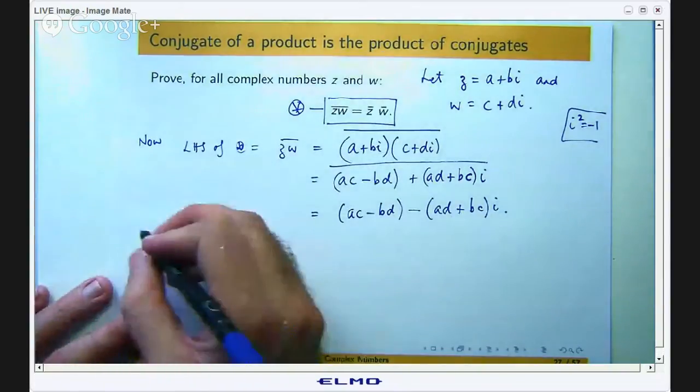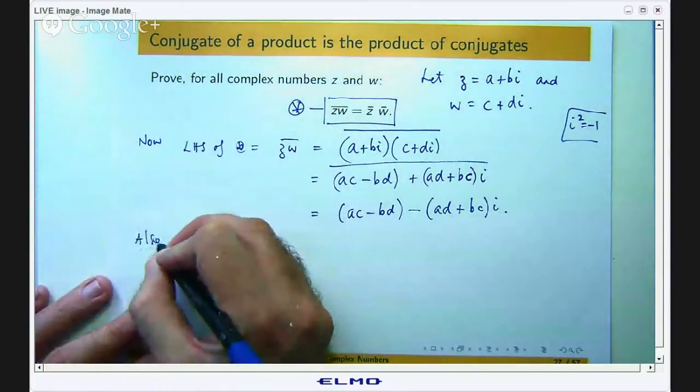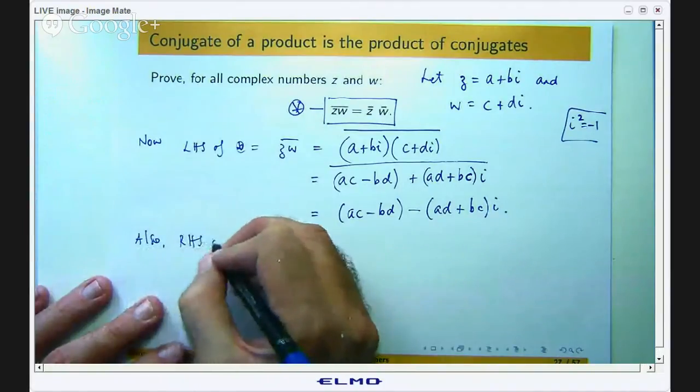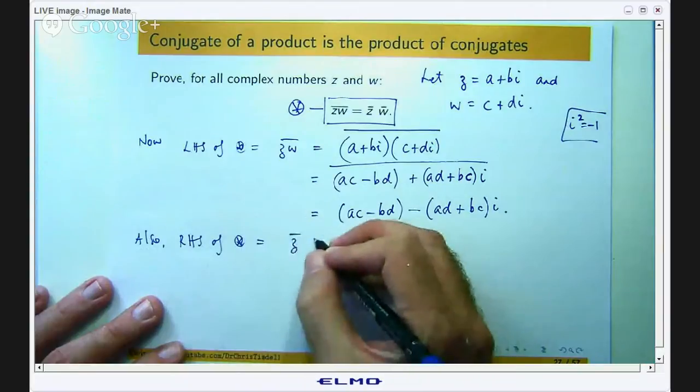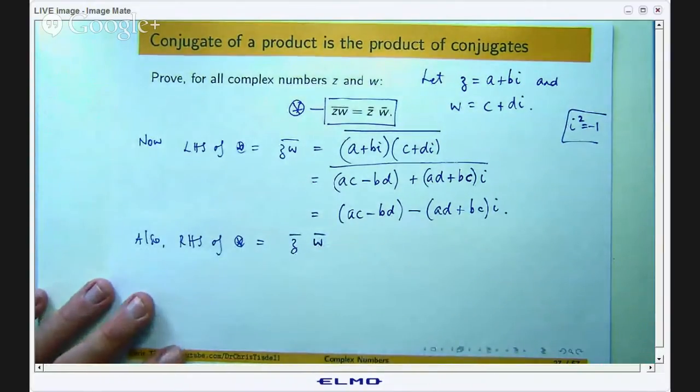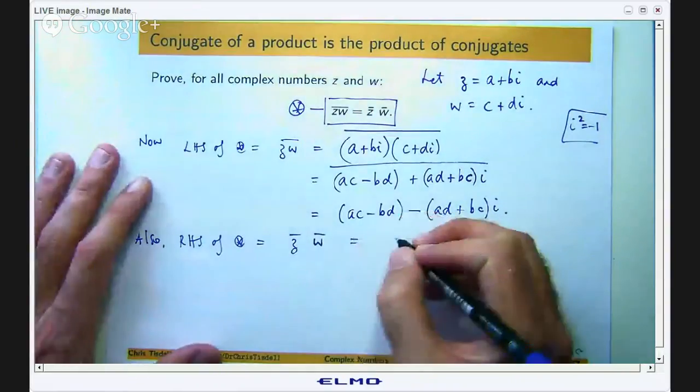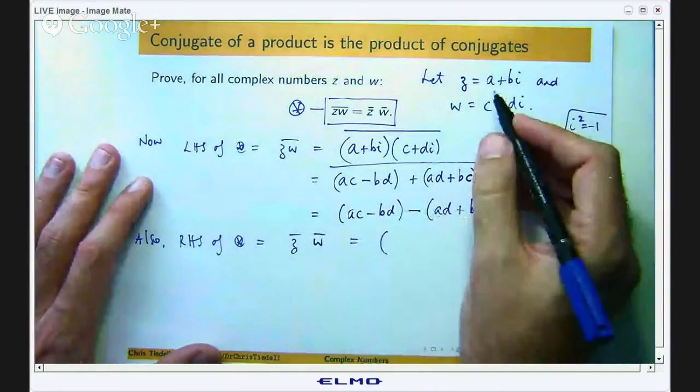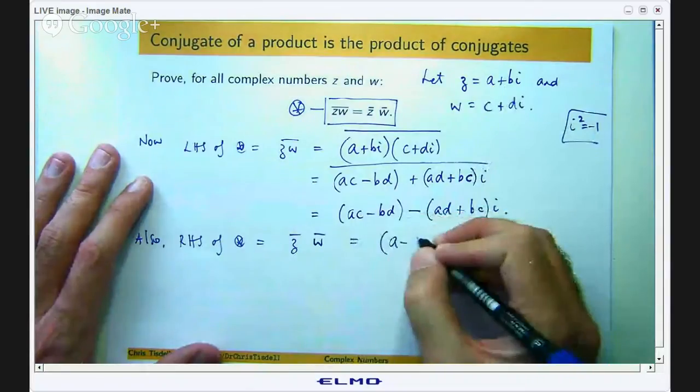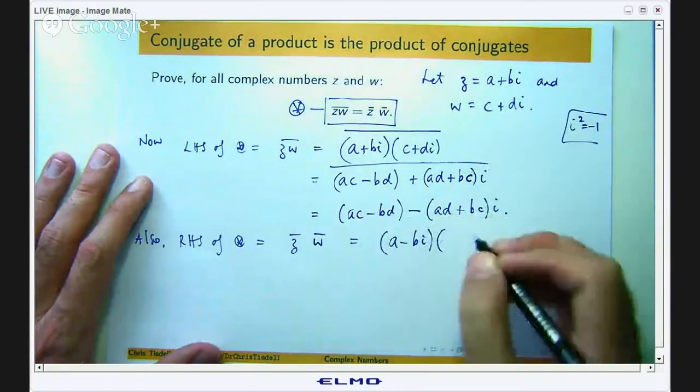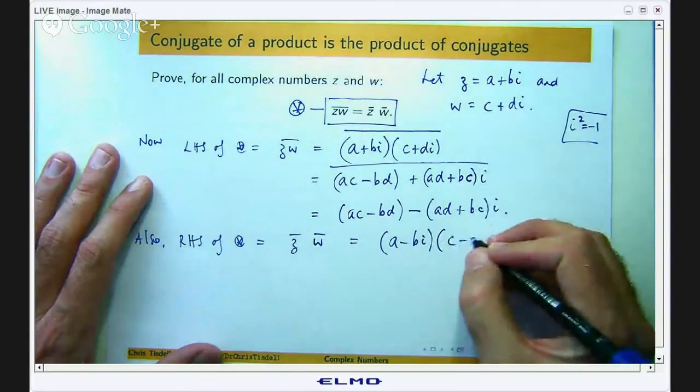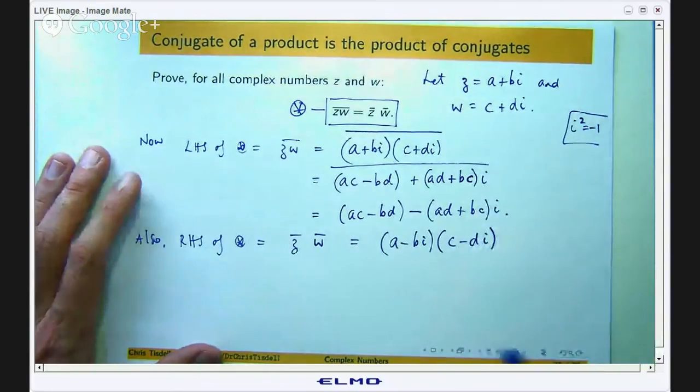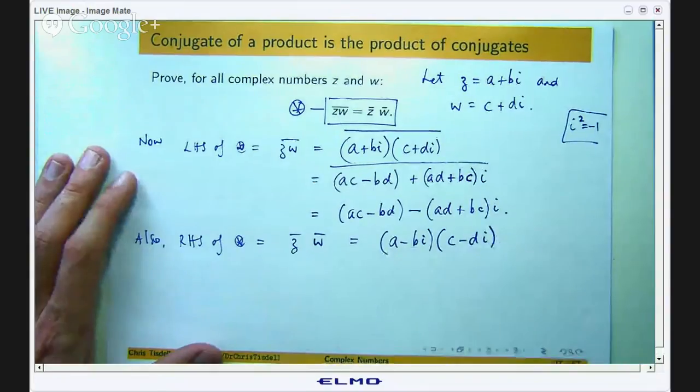Okay so the right hand side of star is the product of the two conjugates. So let us work out the two conjugates and then we will multiply them together. So z bar is going to be a minus bi and w bar is going to be c minus di. So it is just a matter of expanding these brackets really.